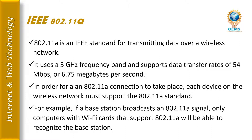IEEE 802.11a is a standard for transmitting data over a wireless area network. It uses the 5 GHz frequency band and supports a data transfer rate of 54 Mbps (6.75 MB per second). For an 802.11a connection to take place, each device on a wireless network must support the 802.11a standard. For example, if a base station broadcasts an 802.11a signal, only computers with Wi-Fi cards that support 802.11a will be able to recognize the base station.